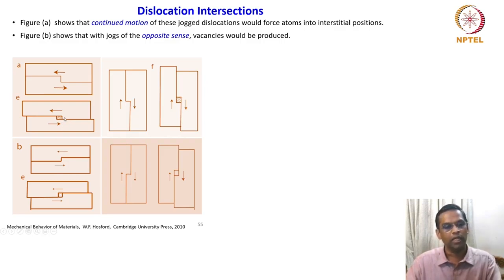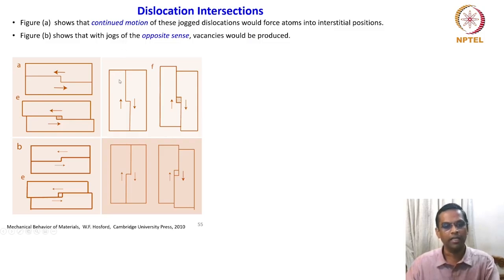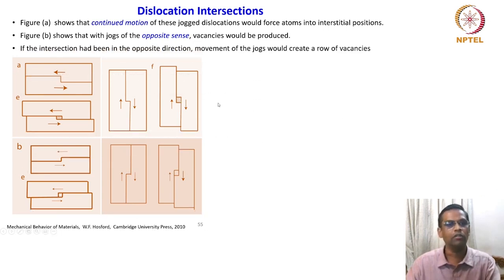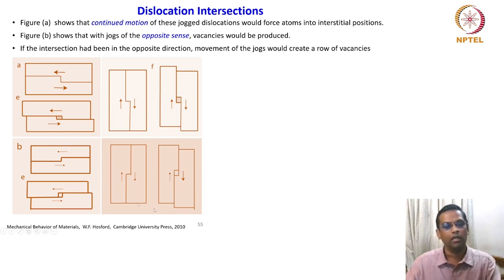So there are two possibilities: either the jogs can get locked by interstitial solute atoms, or they can create a vacancy. This is shown for both E-type jogs and F-type jogs from the previous slide — one produces an interstitial and the other produces a vacancy. If the intersection had been in the opposite direction, movement of jogs would create a row of vacancies.